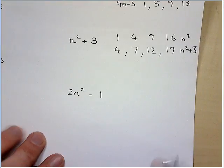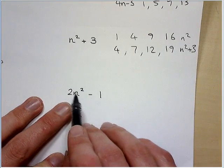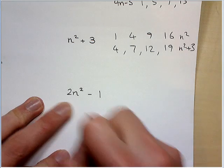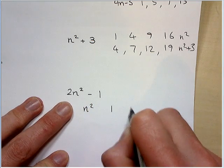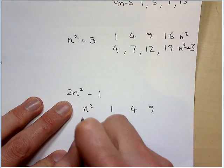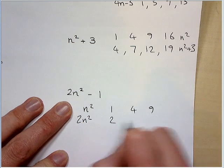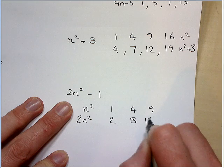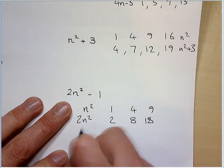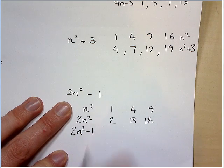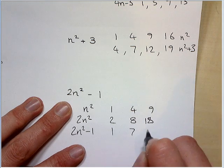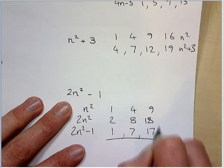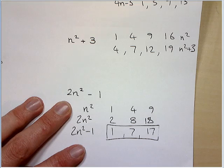This one is a little bit trickier. So this is 2 lots of n squared. So what I'd like to do is write my n squareds first. So 1, 4, 9. So double n squared is going to be 2, 8, 18. Got them in the end. And one less than that is going to be 1, 7, 17. Pretty simple.